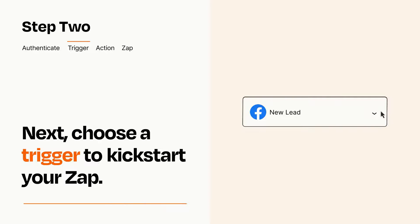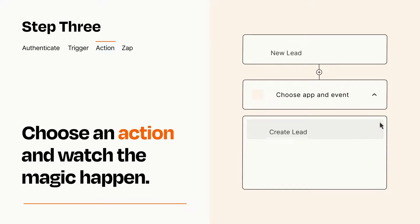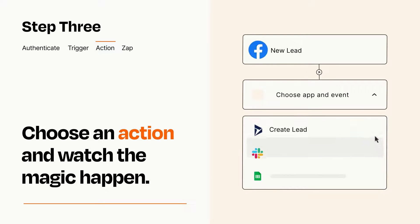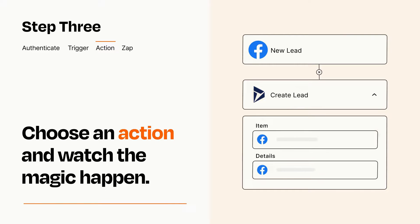This last part is where the magic happens. Choose the action you want to happen in your target app. You'll see a bunch of fields where you can specify the details of your Zap. You can type free-form text or pull data in from your trigger step as needed.